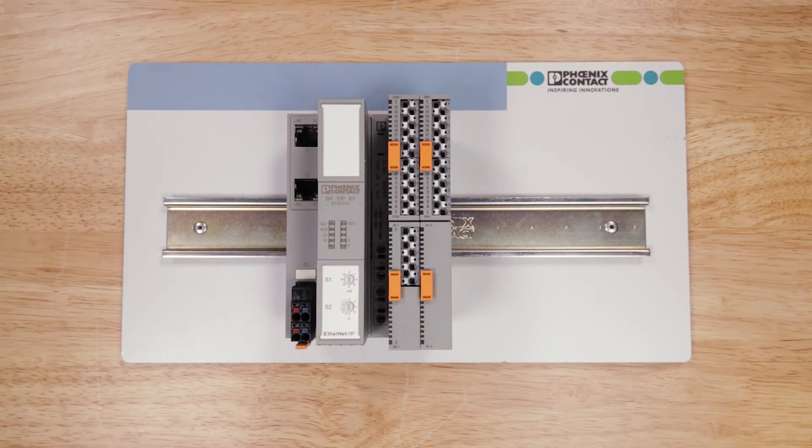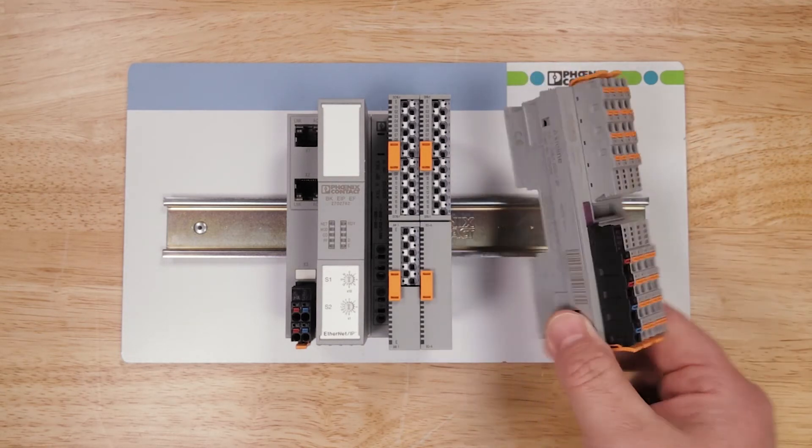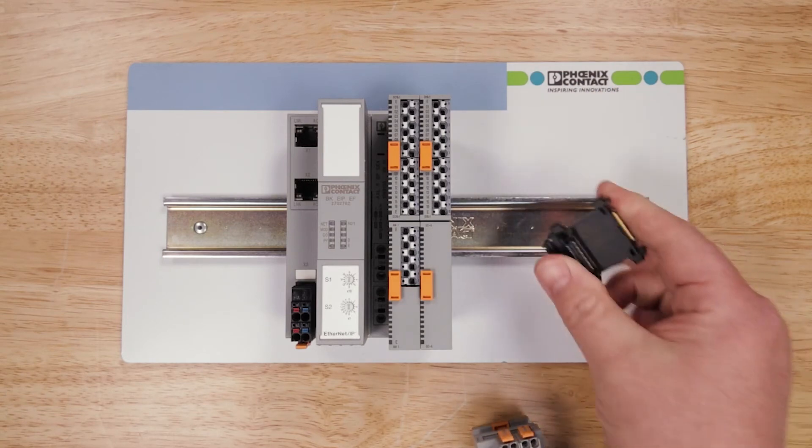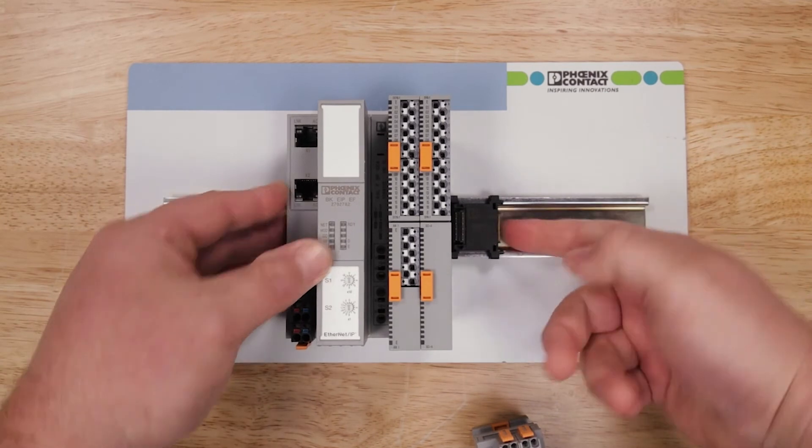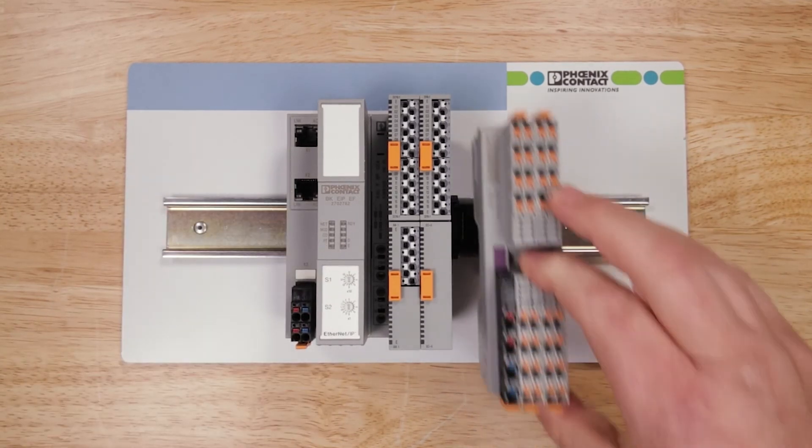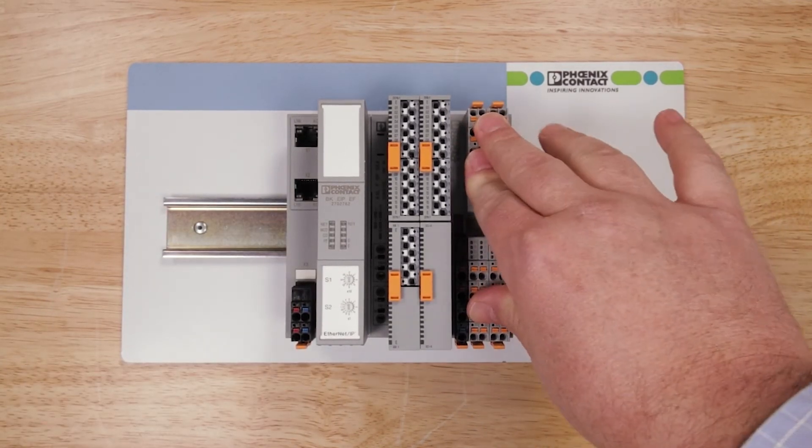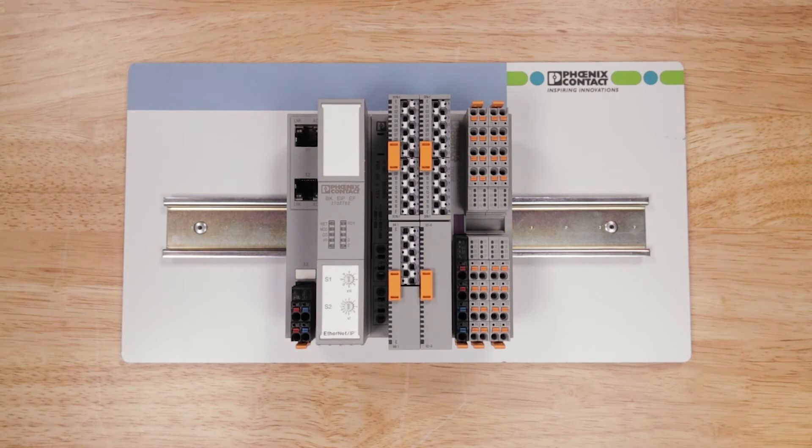But if I want to add some traditional Axioline F I/O, I can do that also. The standard Axioline F I/O comes with a backplane piece with the I/O module. So what I would do is, I would snap the backplane piece onto the rail, slide it, connect it to the I/O device, and then snap the I/O module on. Easy!